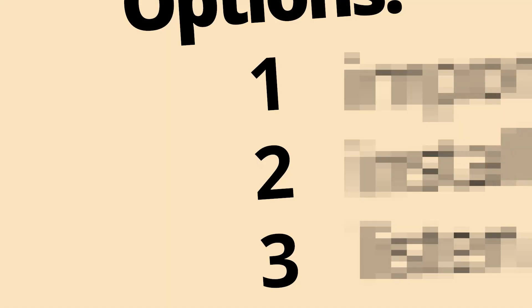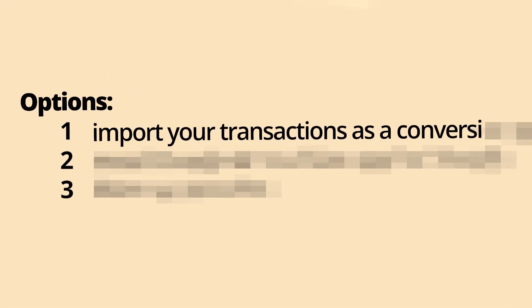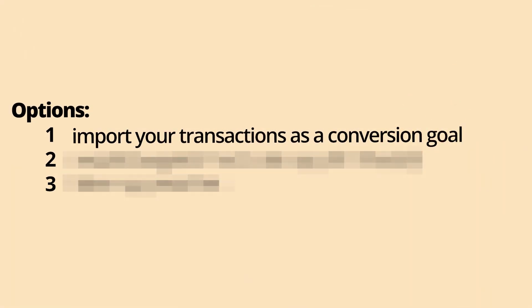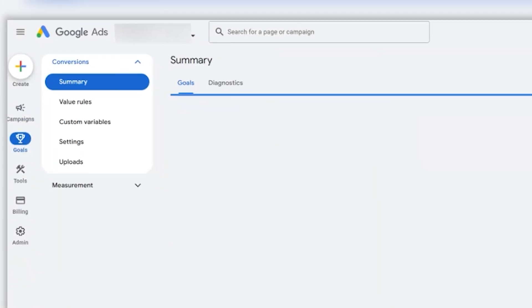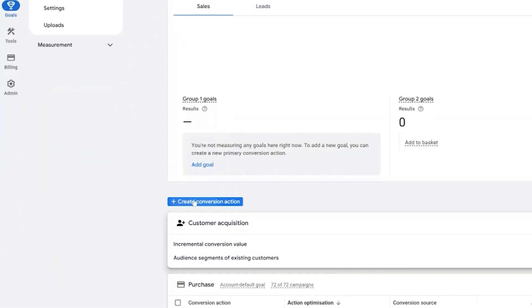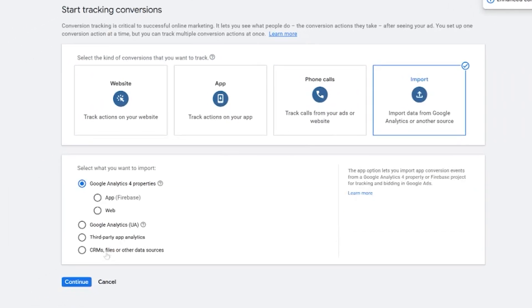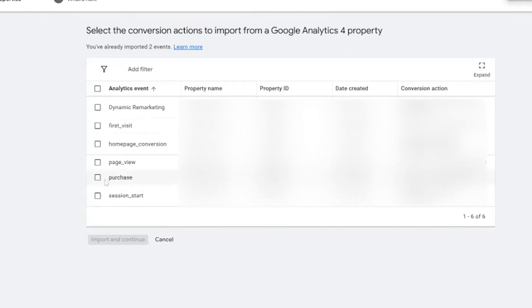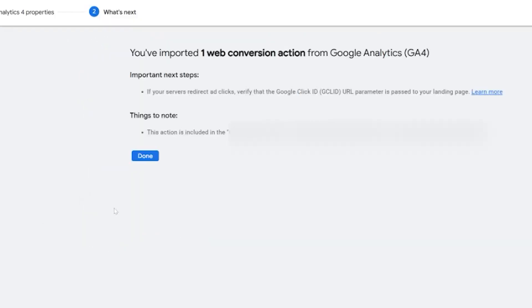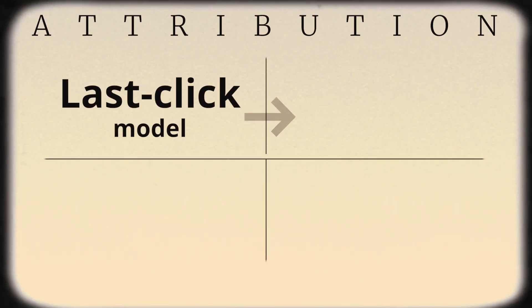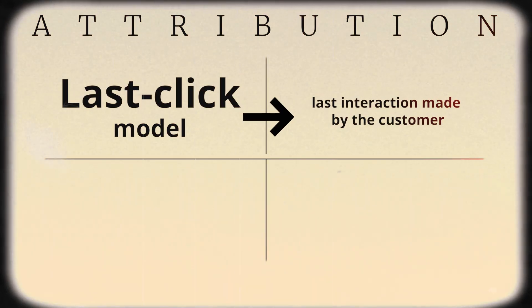Option one: if you accurately track sales in Google Analytics, the quickest solution is to import your transactions as a conversion goal. I never use this method because the downsides are too great. View-through conversions are not tracked. Also, Google Analytics uses last-click attribution across all channels, so you'll have ads contributing to a sale that get no recognition.